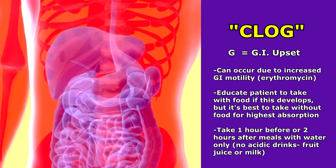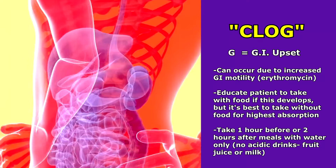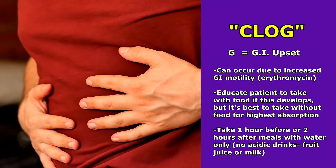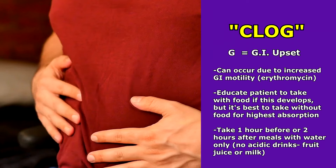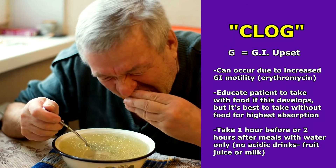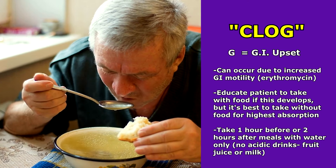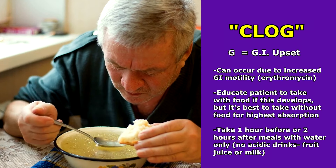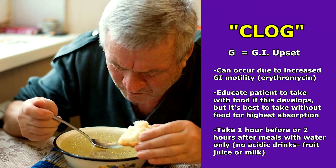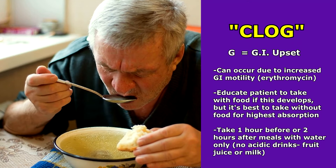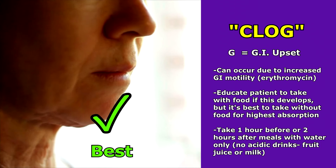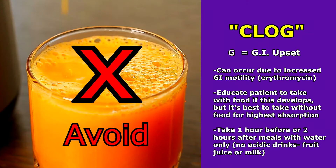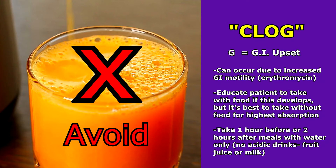G is for GI upset. This tends to happen because of increased GI motility that can occur with erythromycin. If patients can't tolerate it, you can tell them it's okay to take it with some food to help decrease the upset. However, it's best to take this group of medications without food to encourage high absorption. So if GI upset isn't happening, educate the patient to take this medication one hour before or two hours after a meal with about eight ounces of water — not with any acidic drink like fruit juice or milk, as that can alter absorption.